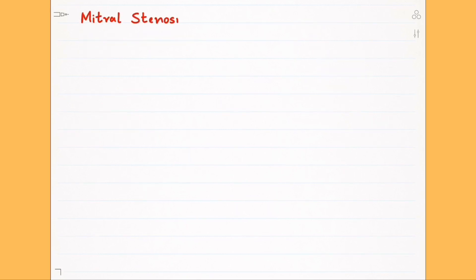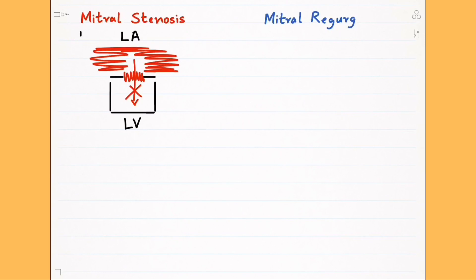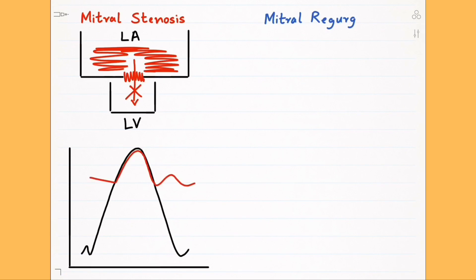Let's talk about mitral stenosis and mitral regurgitation. In mitral stenosis, we have a stiff mitral valve which can't open properly, so it won't allow blood to flow easily from the left atrium to the left ventricle. Blood starts backing up in the left atrium, enlarging the left atrial cavity. The left ventricular and aortic functions are unchanged, so their pressure curves are normal. Because of all the backed-up blood, the left atrium has a higher pressure throughout the cardiac cycle, and the left atrial pressure curve is much higher than the normal 12 millimeters of mercury throughout the cardiac cycle.